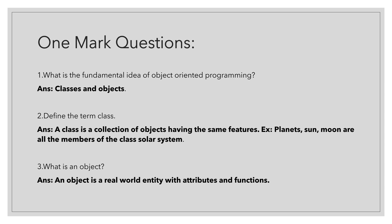Second question is, define the term class. A class is a collection of objects having the same features. For example, planets, sun, moon are all the members of the class solar system.